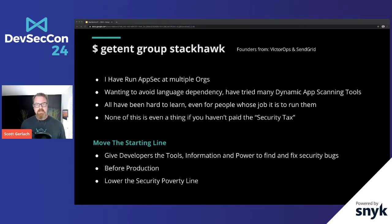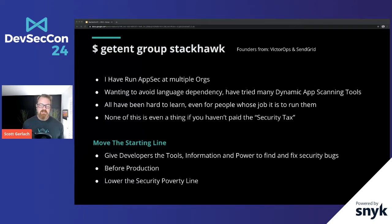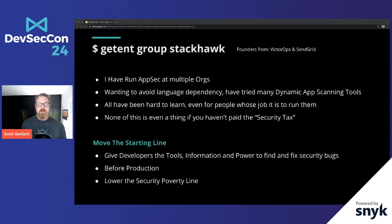It's always a tricky gamut to run because of the difficulties of understanding an application and making the application security tool work — using Zap, Burp, or any of the commercial vendor stuff like Rapid7. We always wanted to avoid that language dependency problem that happens with static code analysis. SendGrid was very much a Go-centric shop, and at the time there wasn't a lot of static code analysis for Go.